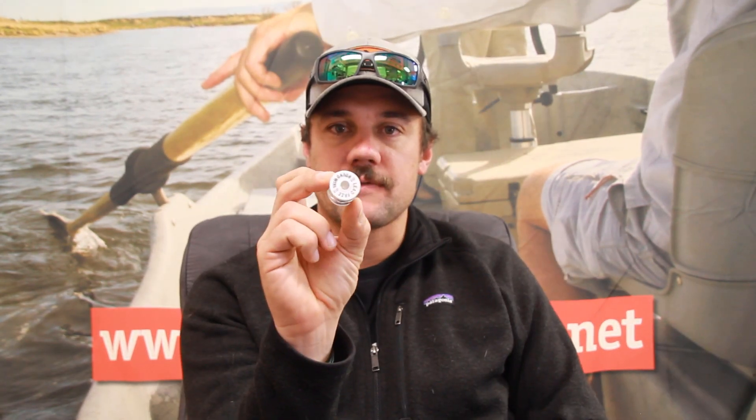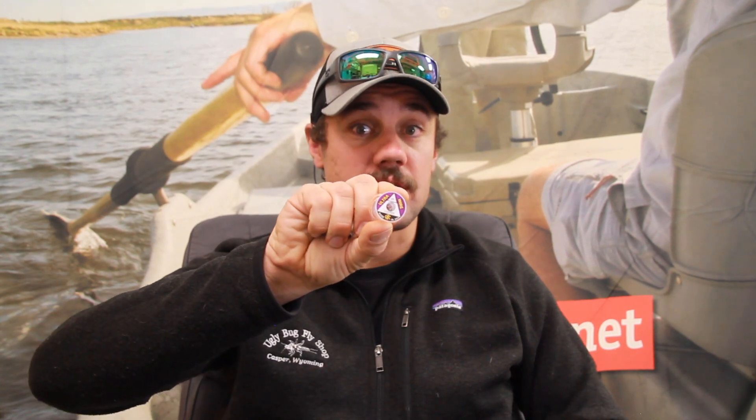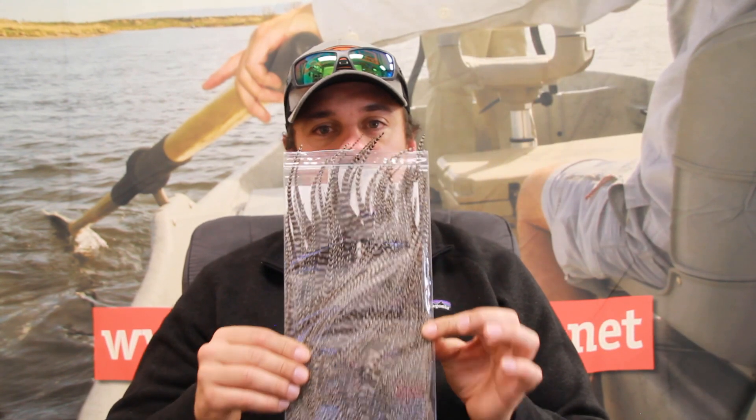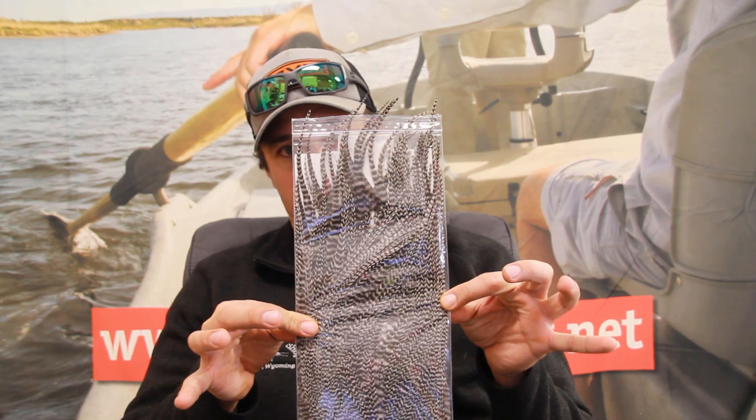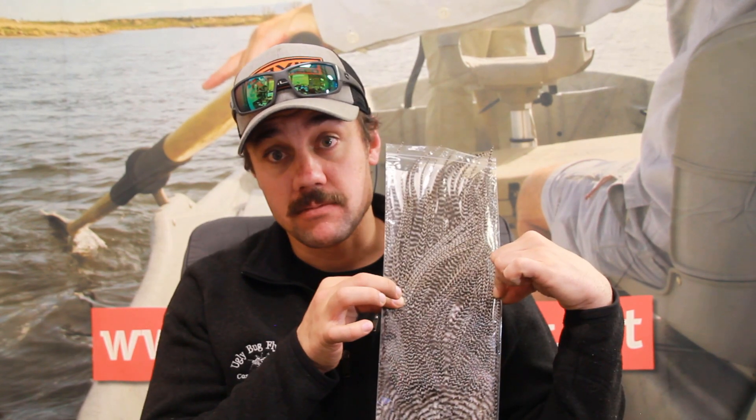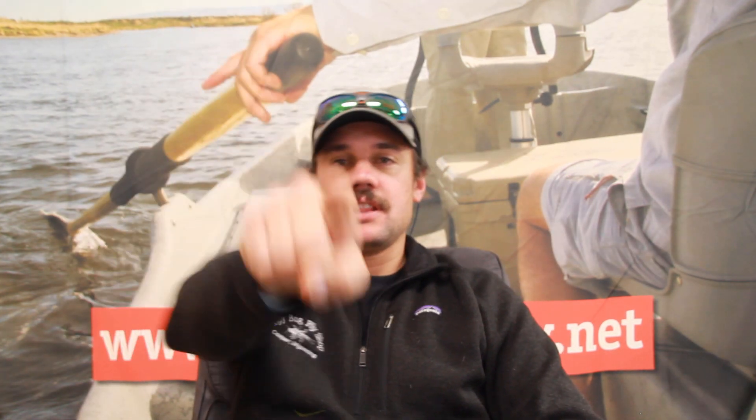We're going to also use some 0.015 lead-free wire for weight and some copper wire in brassy size for the segmentations. Last but not least, Grizzly Saddle in Natural, size to match the hook. Alright, everybody. Thanks for tuning in. Let's get tying.